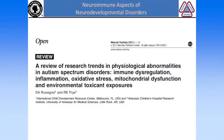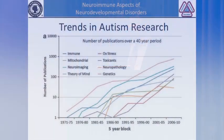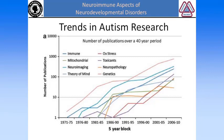Several years ago, myself and a colleague, Dr. Rosignol, realized there were growing trends in novel areas of research that may be telling us something about neurodevelopmental disorders, specifically about autism spectrum disorders, and that these areas may point us to treatments. We wrote this review in Molecular Psychiatry. We looked specifically at immune dysregulation, inflammation, oxidative stress, mitochondrial dysfunction, and environmental toxicant exposure, and compared the amount of research in these novel areas to more traditional areas.